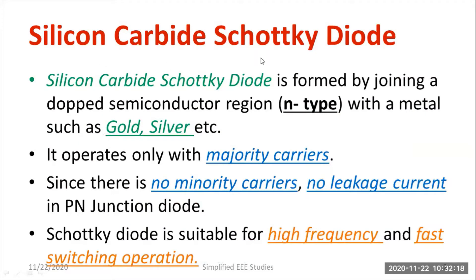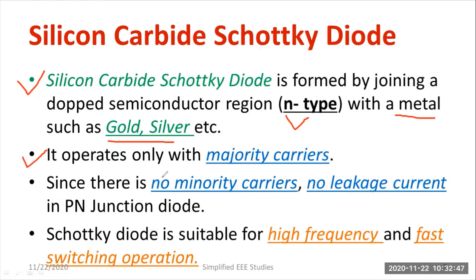What do you mean by silicon carbide Schottky diode? Silicon carbide Schottky diode is formed by joining a doped semiconductor region, especially n-type, with metals such as gold, silver, etc. Basically, it is a metal-semiconductor junction diode. Moreover, it operates only with the majority carrier, so it's a majority carrier device. There won't be any minority carriers in the device.